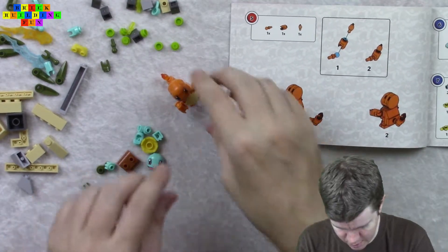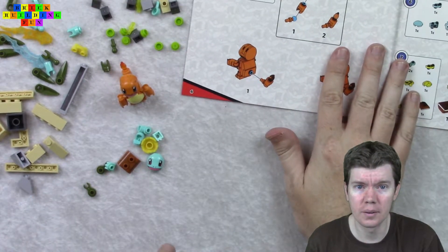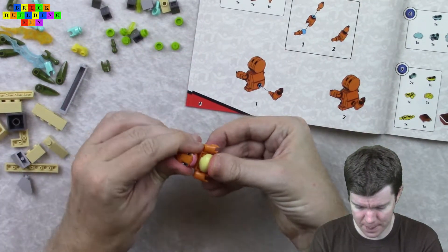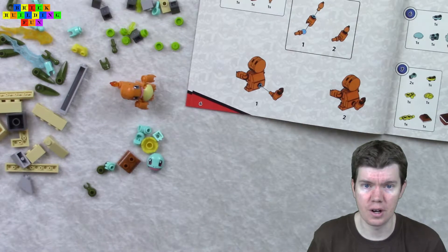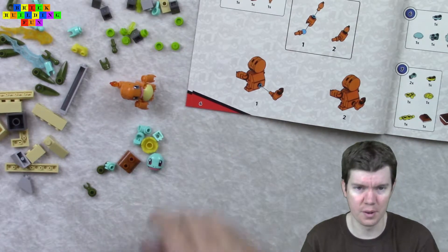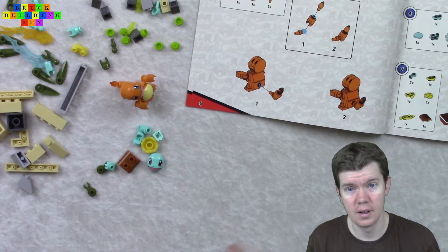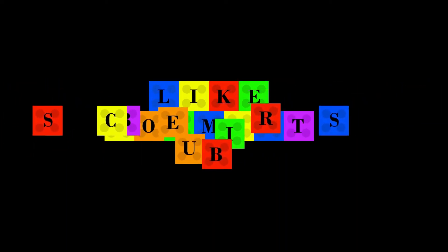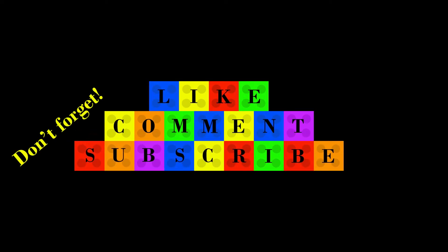Okay. Now we're going to build Squirtle. Oh, we've been going a while. That took the whole video. So, okay. Next time we'll start with Charmander. Not Charmander. With Squirtle. And, yeah. So, I'll see you later. Bye.